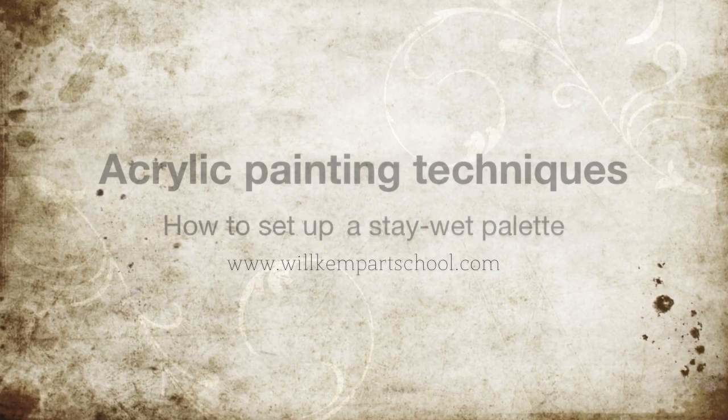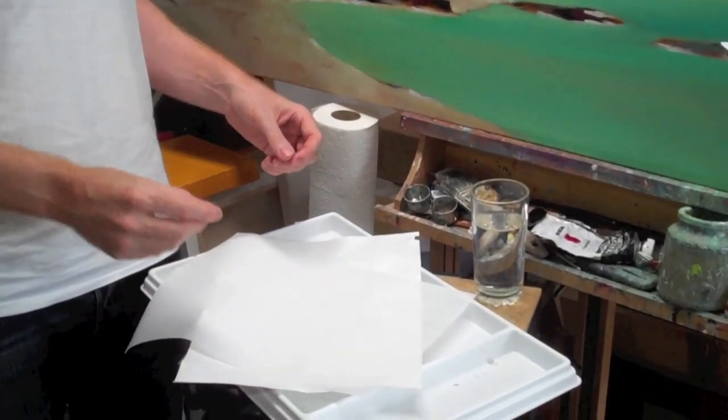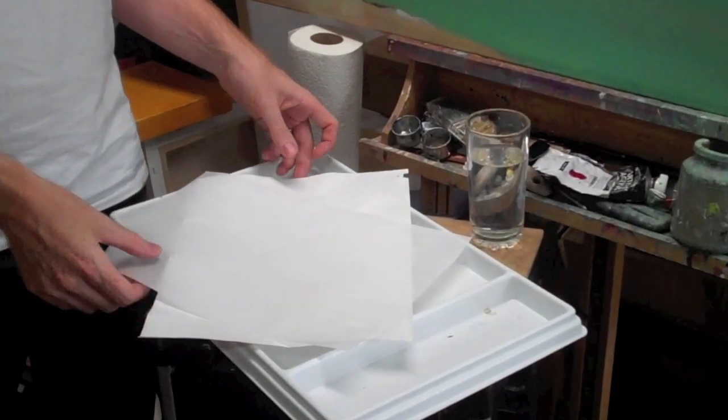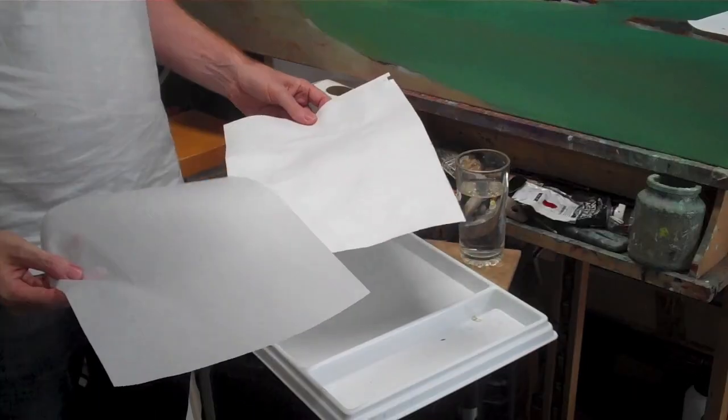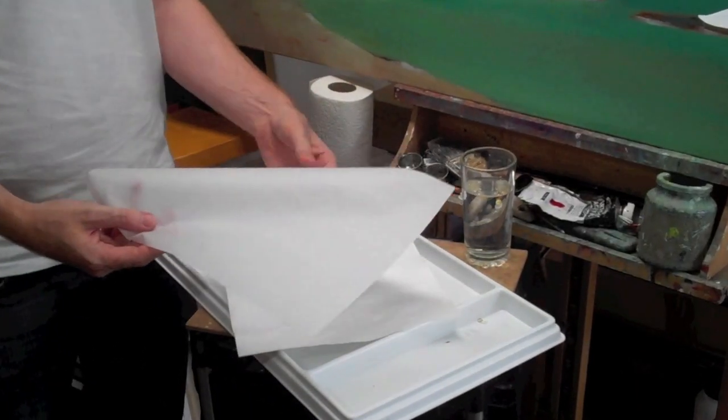A lot of the mistakes people make when setting up a stay-wet palette is not using enough water on it. So all you have is two parts: one part which is like the blotting paper part, and one part which is like the greaseproof paper part.